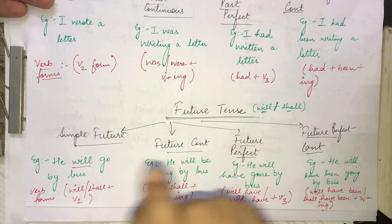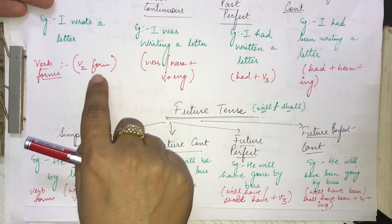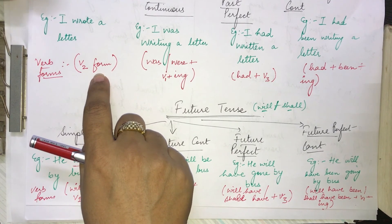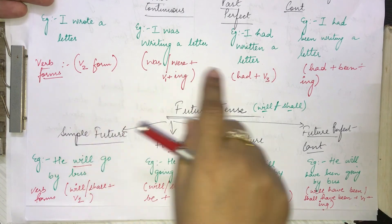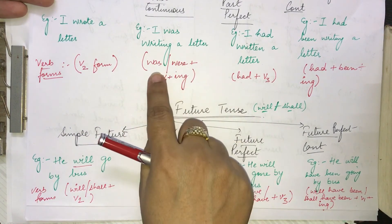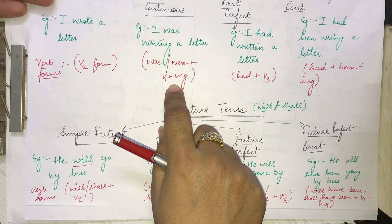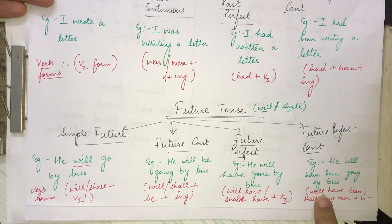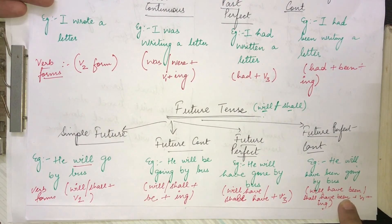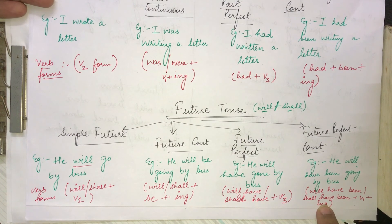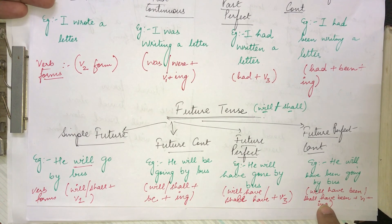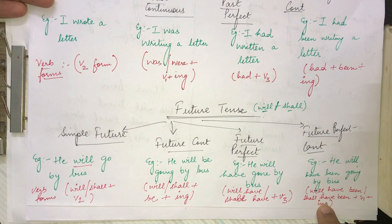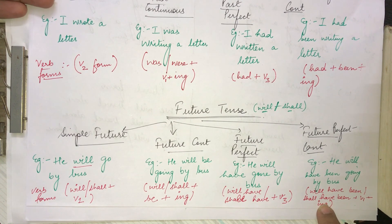The most important thing is the verb forms. It is very important to know which verb form to use with which type of tense. In case you have any doubt or query, kindly write down in the comment section below. Please subscribe to our channel, English Times. Thanks and have a nice day.